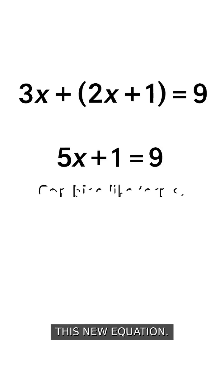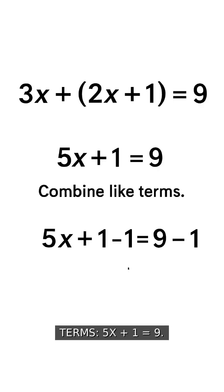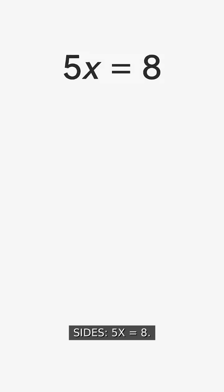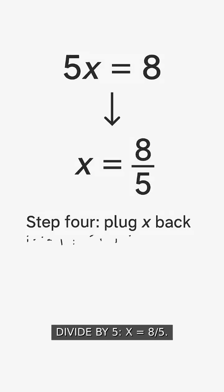Step 3. Solve this new equation. Combine like terms. 5x plus 1 equals 9. Subtract 1 from both sides. 5x equals 8. Divide by 5.